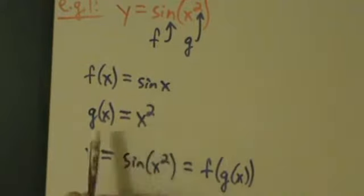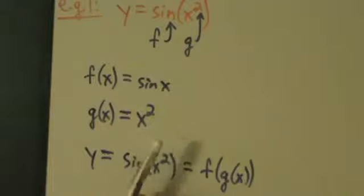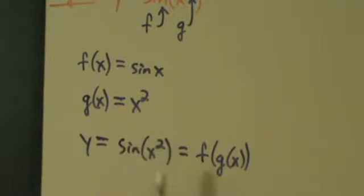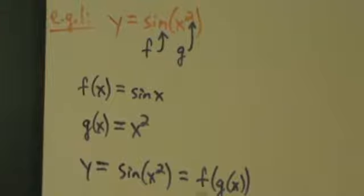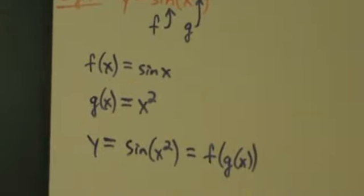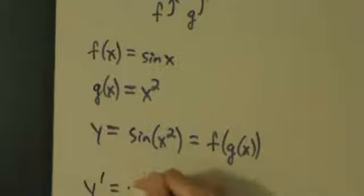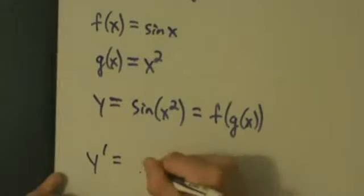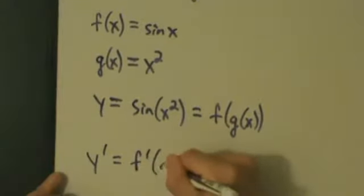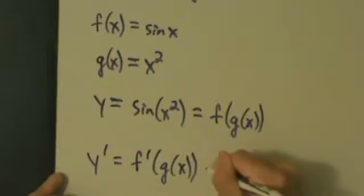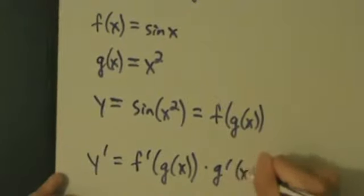Because f of x is sine of x and g of x is x squared, f of g of x is going to be sine of g of x, which is sine of x squared. So the chain rule tells us that the derivative, y prime, equals f prime of g of x times g prime of x.